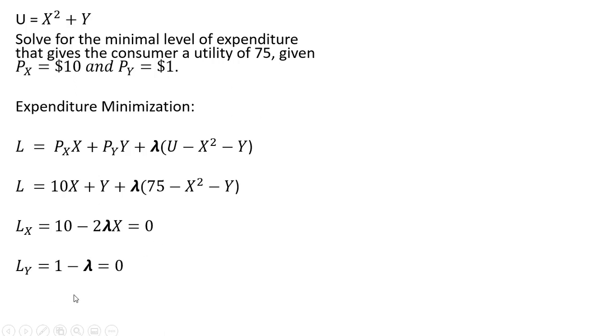The partial derivative of the Lagrangian with respect to good y. The partial derivative of y is 1, and then the partial derivative of lambda multiplied by minus y is just minus lambda.